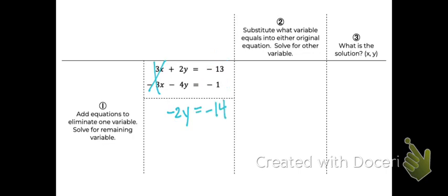Once you add them and eliminate a variable, now you have an equation you can solve because there's just one variable left. If I wanted to solve for y, I'm going to undo the multiplying by negative 2 by dividing by negative 2. And I see that y equals 7.